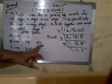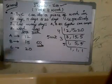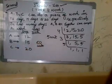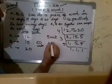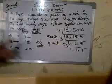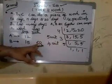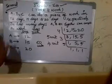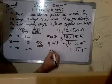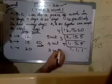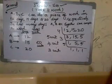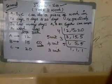If the total work is 60 units, working 60 divided by 15 gives 4 units per day. Working 60 divided by 20 gives 3 units per day. So A does 5 units, B does 4 units, and C does 3 units per day.